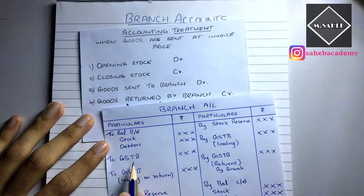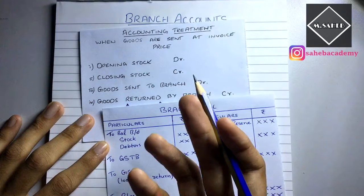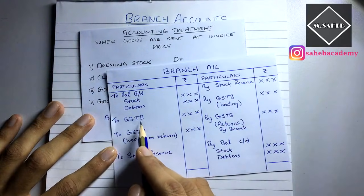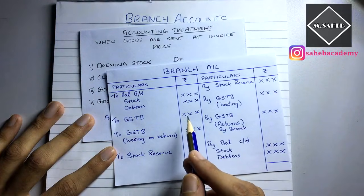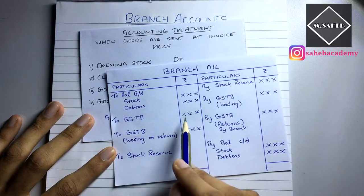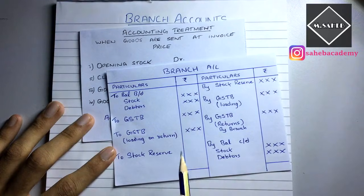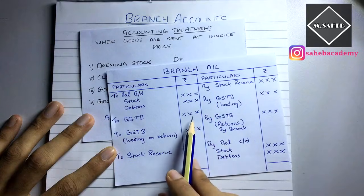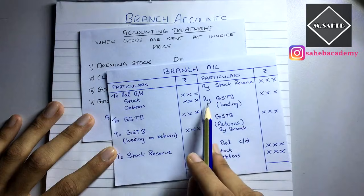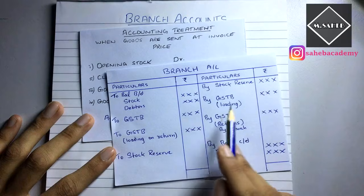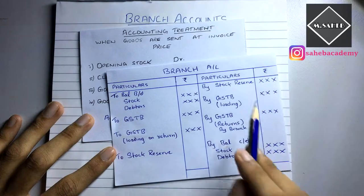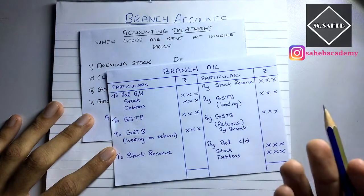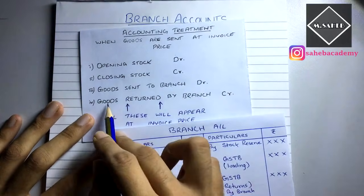For goods sent to branch (GSTB): GSTB is always debited since it is an expense for the head office. If goods worth ₹2 lakh (invoice price) are sent with ₹20,000 profit included, we debit GSTB ₹2 lakh as usual and then make a credit entry 'by GSTB' for ₹20,000 only — the loading amount — to remove that profit from the branch account.